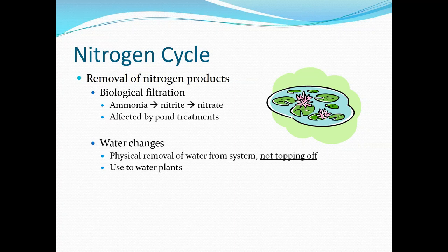Water changes are the physical removal of water from the system, and it does not just mean topping off your system from evaporation. When water evaporates, it doesn't bring anything with it except hydrogen and oxygen, so it really isn't going to dilute the chemicals. We highly recommend that any fish water is used to water plant systems — plants love fish water, all those nitrates are really good for them. If you're doing water changes, use the water for your lawn or plants, and as long as there's no medications in it, you can even water vegetables.